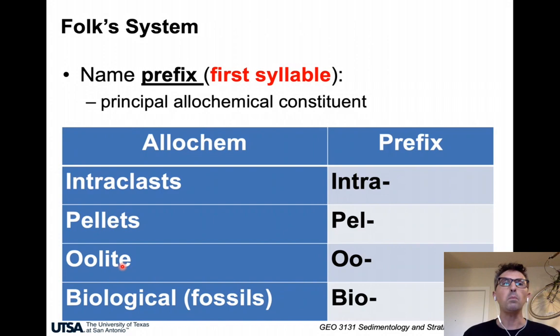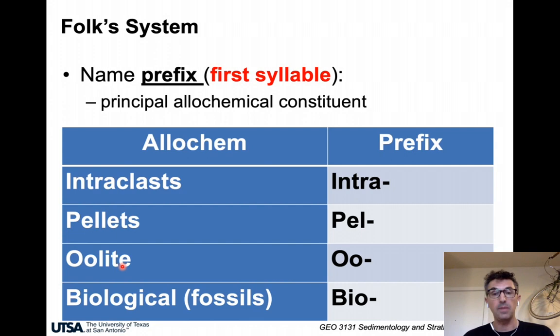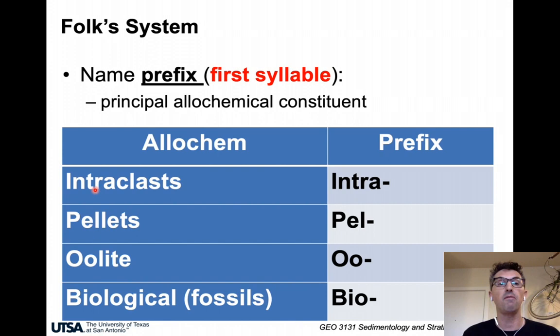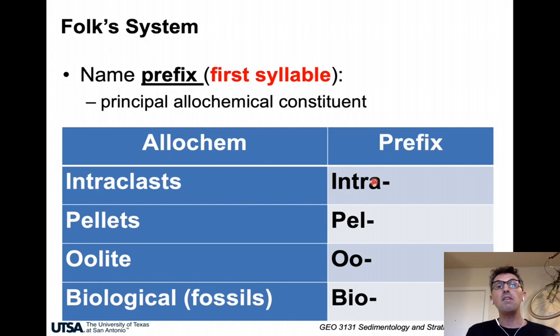Let's start with the Folk system. The first thing to define is the prefix — the first syllable of the name — which corresponds to the principal allochem identified in the sample. For instance, if we identify that 95% of allochems in a specimen correspond to intraclasts, we will use the prefix 'intra'. Similarly, if the main allochem is pellet, we use 'pel'; 'oo' for ooid; and 'bio' for biological fossils.